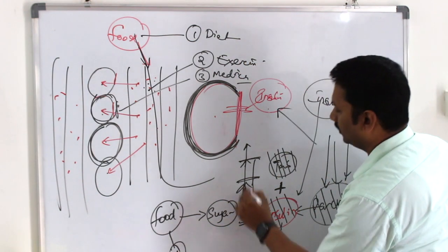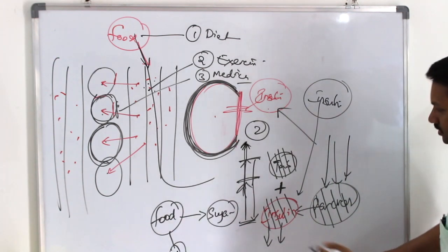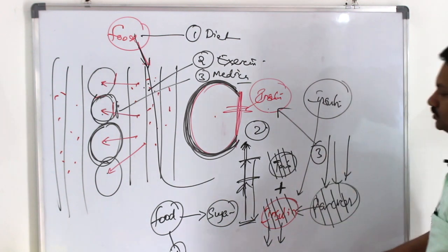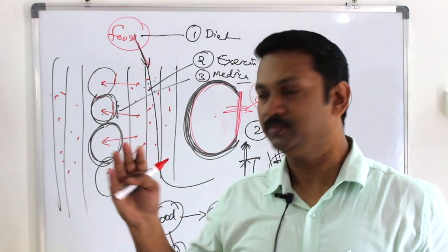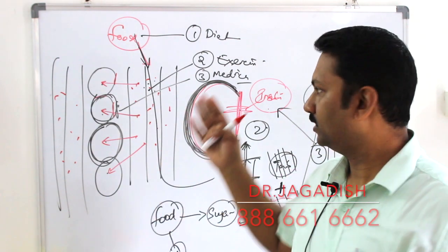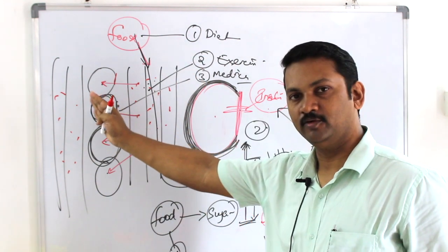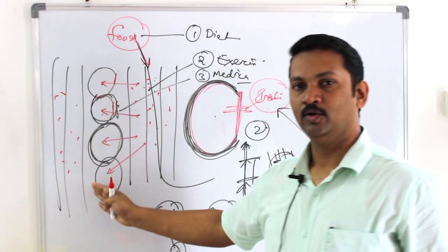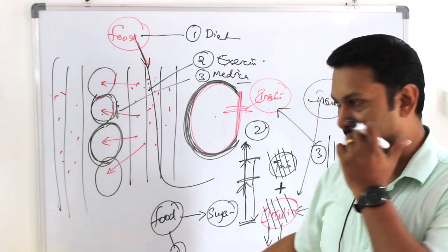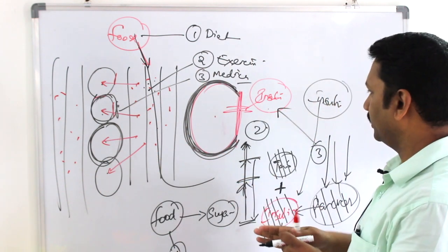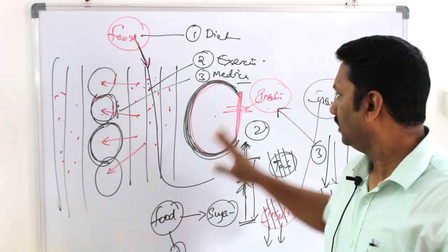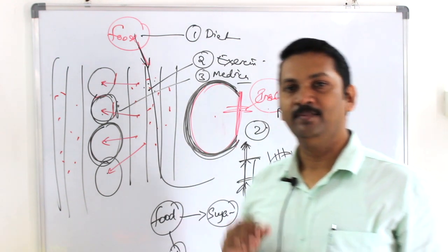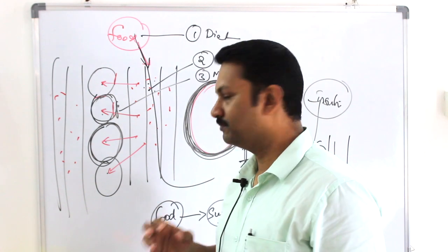So food control, diet management, exercise, and medicines are the key pillars. All medicines are supporting insulin, but not a substitute for insulin. With food control, exercise, and proper control, management of diabetes is very easy. Diabetes is not a disease — it is just a condition.